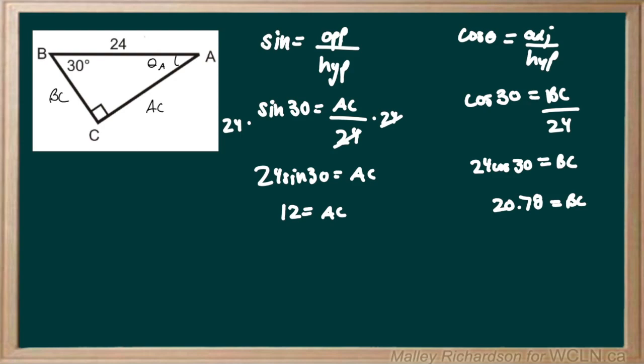Now that we have our two side lengths of AC and BC, we can solve for our unknown angle of theta A. Now remember, all the angles in a triangle have to add up to 180. So we have 180 has to equal our 30 degrees plus theta A, plus our 90 degrees in the corner.